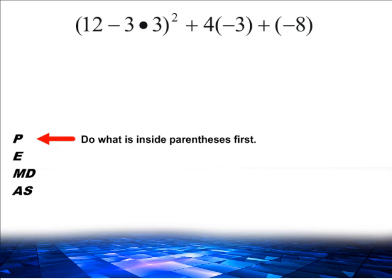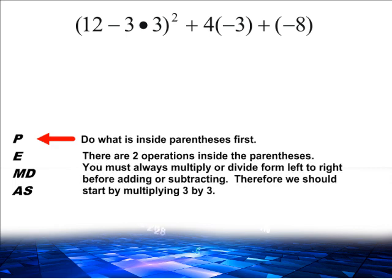In this example, inside the parentheses, we have 12 minus 3 times 3. Make sure that you multiply 3 times 3 first because you must always multiply or divide before you do any addition or subtraction.